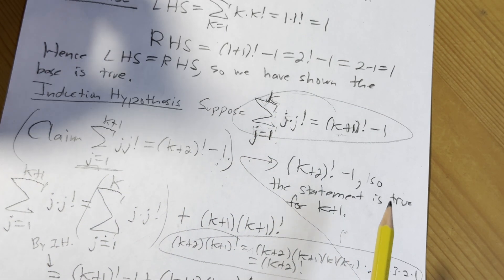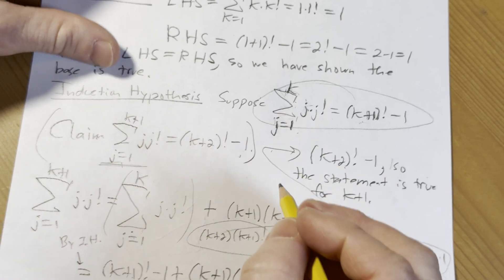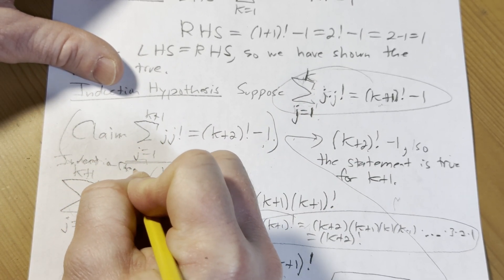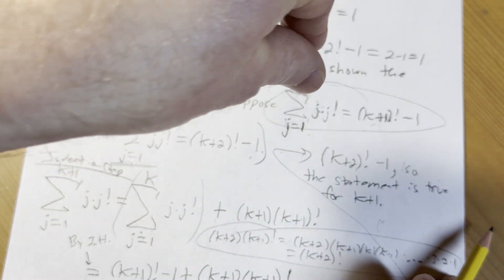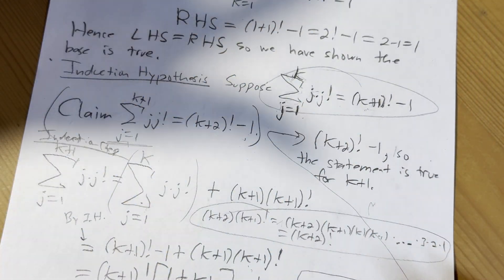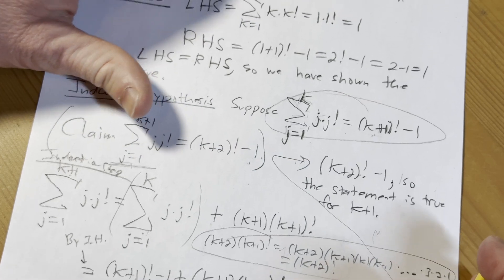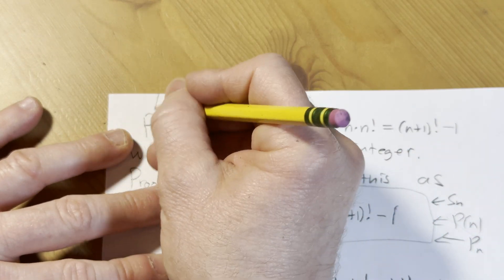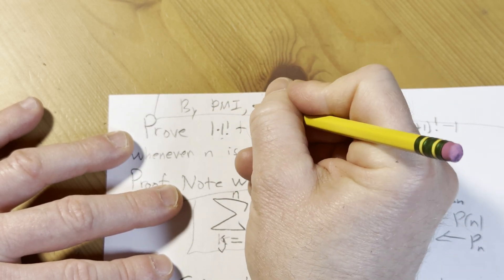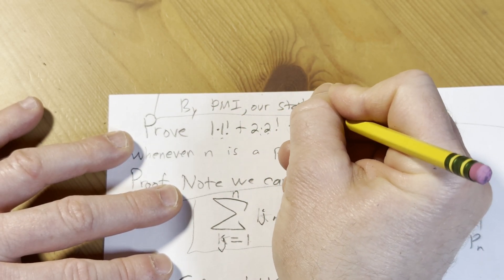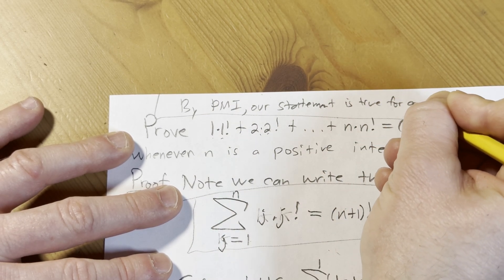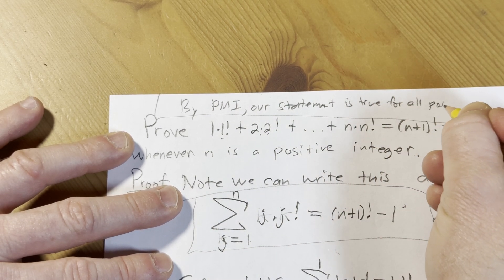That's, well, this is the induction step, actually. Induction step. You can break this up into three steps, but there it is. So we assume it's true for k, show it's true for k plus 1. By the principle of mathematical induction, it's true for all positive integers n, and so the proof is complete. So you would just say something like, I'm running out of room here, by the principle of mathematical induction, our statement is true for all positive integers n.